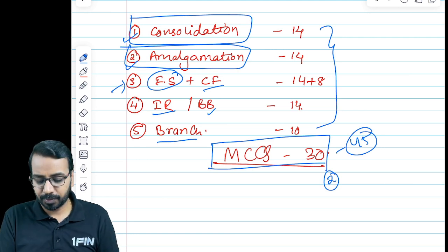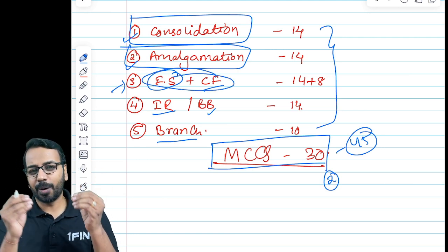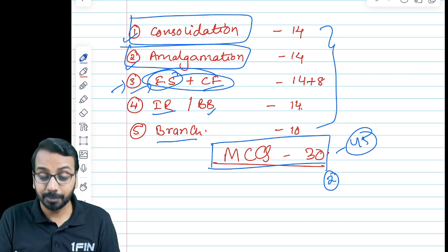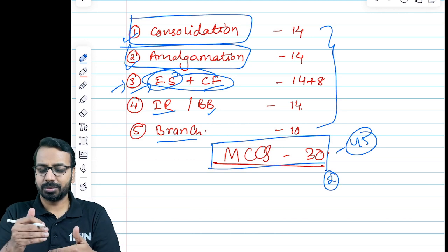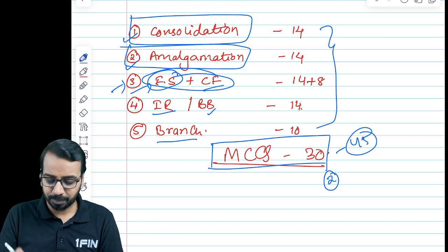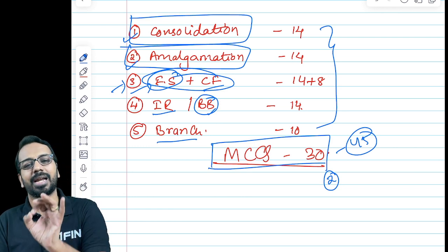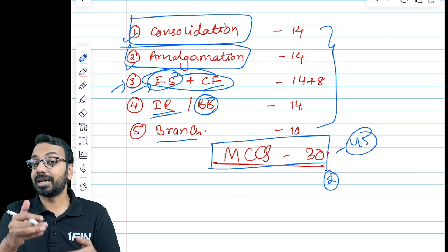So what you instead do is try to first extract maximum possible from financial statements and cash flow. See, P&L and balance sheet you have been preparing right from 11th standard, so this is something which you can handle. So that you should try to complete first because you will not get many unique adjustments. Then you can maybe move on to buyback and internal reconstruction.